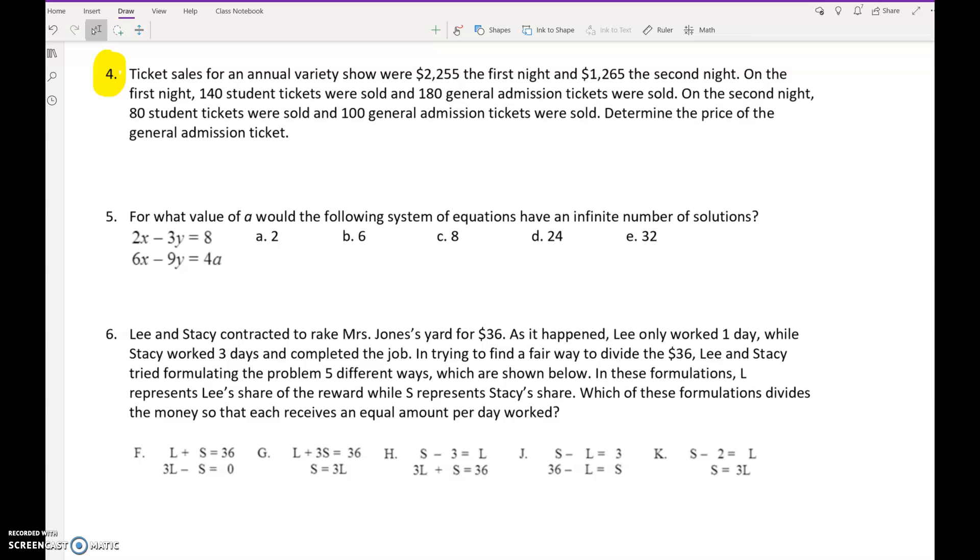Number four on the test is going to be a very similar word problem, and the really awesome thing about this problem on the test is that instead of saying determine the price of general admission tickets, it's going to say write the system of equations. You do not have to solve, only write the equations. So the nice thing about number four on the test is that you don't have to fully solve the problem, you just have to write the equations.